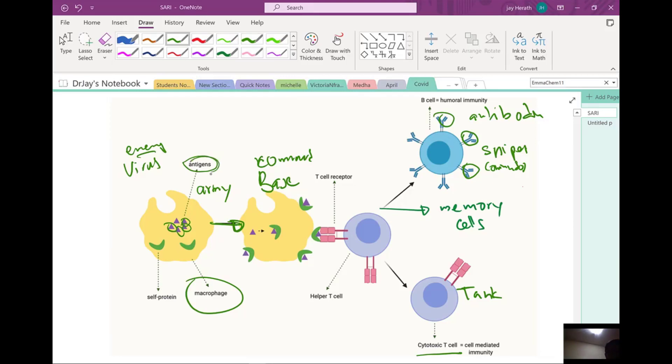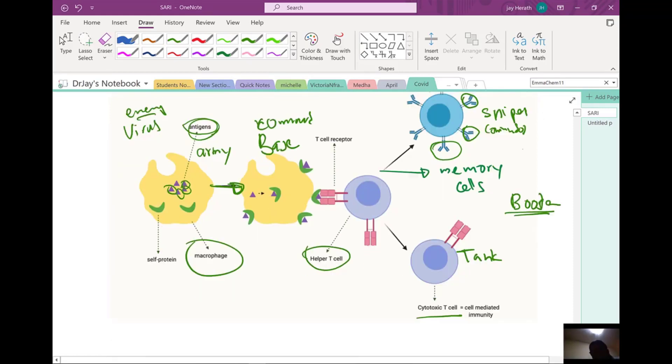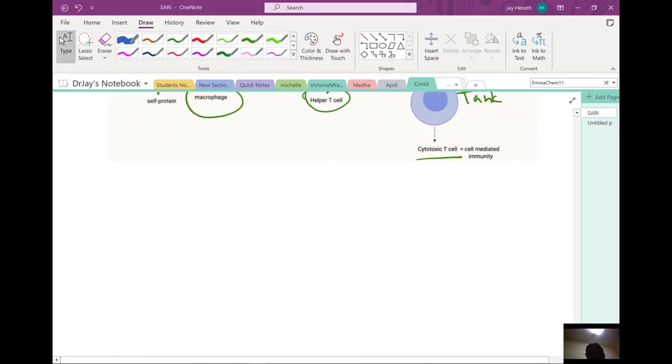It detects the antigen and transfers the information into the other cells, the helper T cells and the memory B cells. They produce in the millions these antibodies. Sometimes we heard about the booster dose because if we have a diminished memory about the antibody production, the booster dose is needed. That's how things work. If you have any comments, please leave a comment. Thank you.